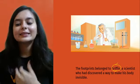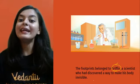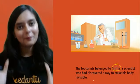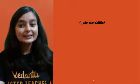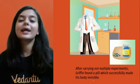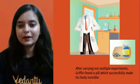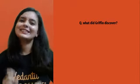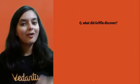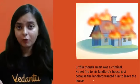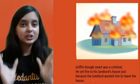Griffin's character sketch is very important. He was a scientist who had discovered a way to make his body invisible. After carrying out multiple experiments, he finally found a pill which successfully made his body invisible — although his body remained solid like a sheet of glass. This reminds us of Mr. India, although Mr. India received the formula, whereas here Griffin prepared it himself.